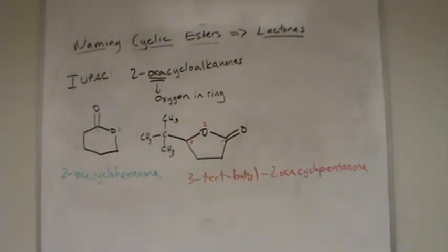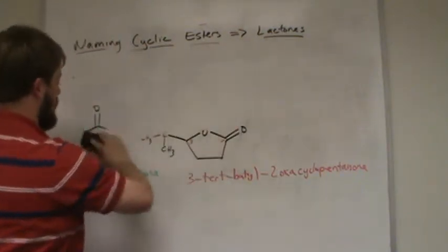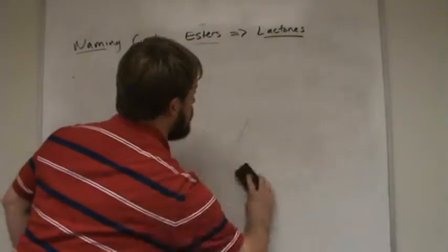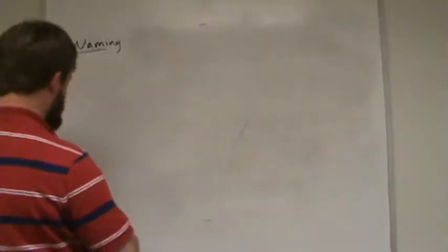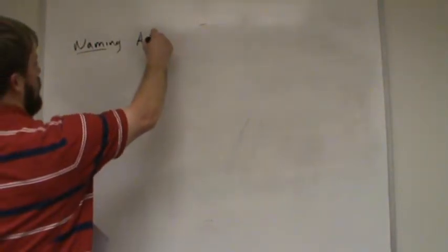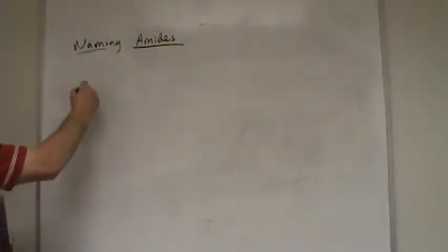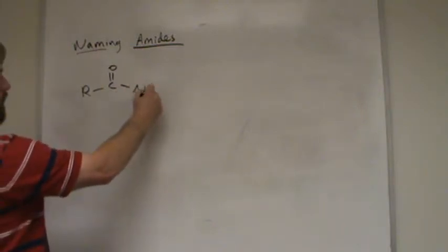So let's transition now from esters to amides. It's naming amides. Remember, an amide is something where you have a carbonyl carbon attached to a nitrogen. It can be NH2, or the nitrogen can have one or two alkyl groups bonded to it.